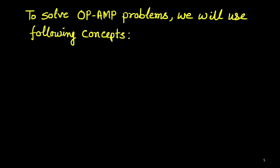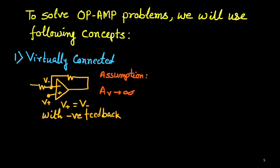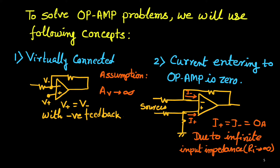To solve op-amp problems we are using four concepts. First is virtual short: V minus and V plus will be the same if the circuit has negative feedback — meaning there is a connection from the output to the negative inverting terminal — and the op-amp is ideal with infinite voltage gain. Second, the current entering or leaving the op-amp is zero, because of the high input impedance of the ideal op-amp. So I minus and I plus are both 0 amperes.